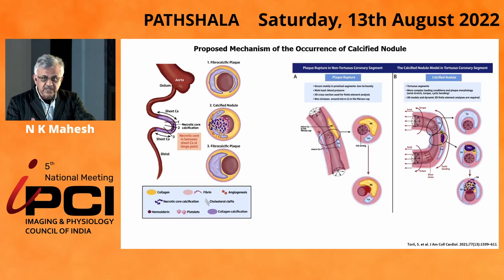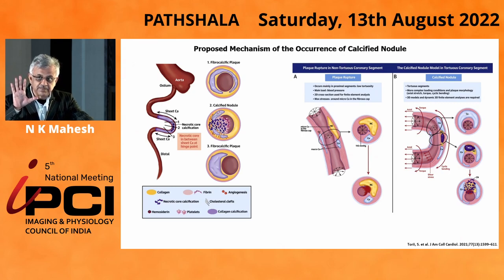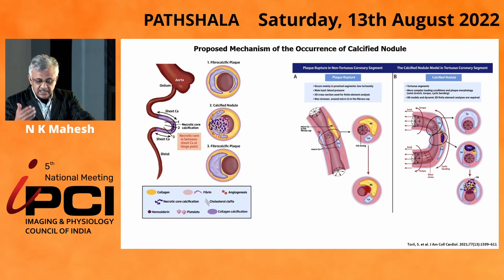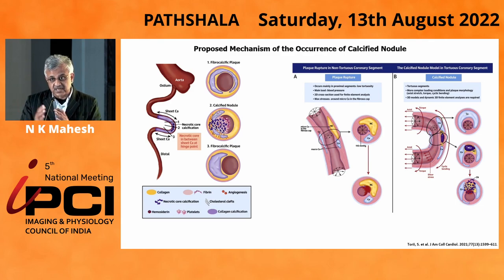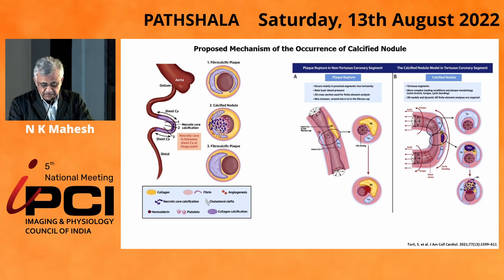If you look at the normal coronary artery anatomy where there is no calcium, there is no calcific nodule. Invariably, your MIs are in the proximal LCX, proximal LAD, proximal circumflex. It is only in the calcified nodule that you get a mid lesion, because this curve is very important and you have to have collagen-rich calcium surrounding a nodular calcium which breaks and becomes a calcific nodule. This concept is very important.